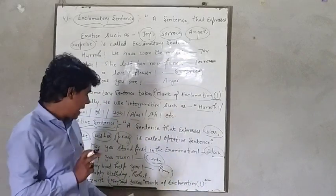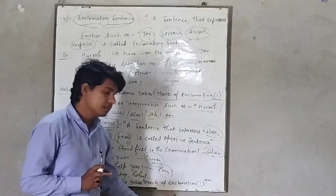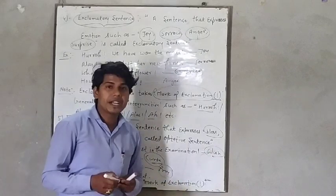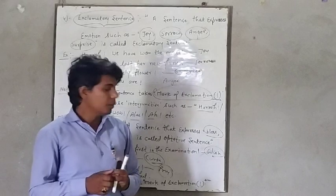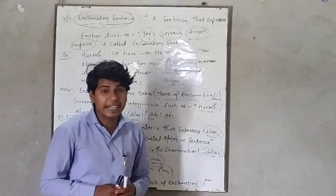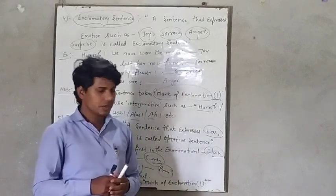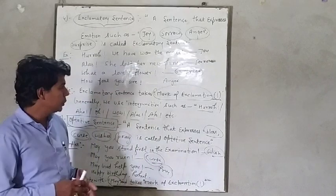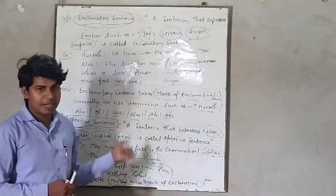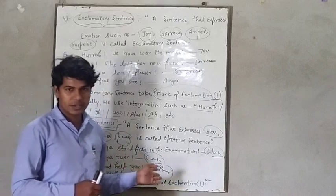And takes mark of exclamation. In optative sentence also, we use mark of exclamation at the end of the sentence. Is that clear? I hope you have understood these two sentences: exclamatory sentence and optative sentence.